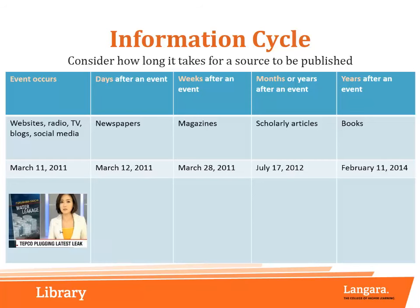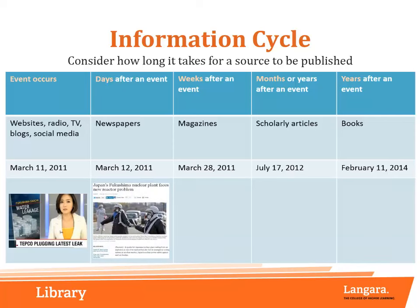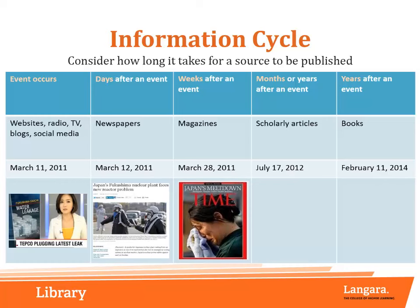For example, on March 11, 2011, a tsunami hit the Fukushima nuclear power plant in Japan, causing radioactive material to be released into the environment. This was a significant disaster that left many survivors of the initial incident without homes and with long-term health risks. From this chart, we can see the information lifecycle that occurred following the disaster. The day of the event, websites, social media, television, and blogs were covering the story. In the following days, it was printed in physical newspapers. After a few weeks, popular magazines were publishing more in-depth stories.